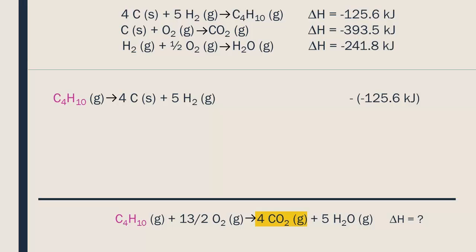Next, we need 4 CO2s in the products. The second intermediate reaction has a CO2 in the products, but we have to multiply it by 4 since there are 4 of them in our final equation.